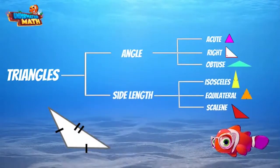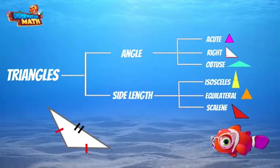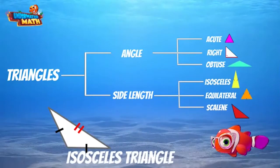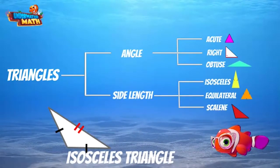Remember, we classify triangles by angle and side length. The tick marks on the triangle tell me that these two sides are the same length because they have the same number of tick marks. This side is not the same length because it has two tick marks. If we classify by side length, we know this is an isosceles triangle because two sides are the same length. Let's look at the angles on this triangle.